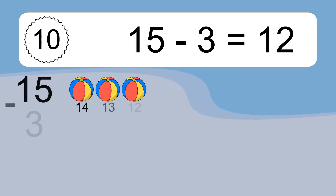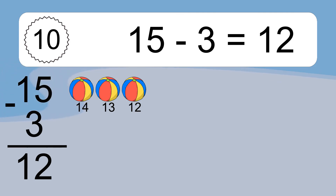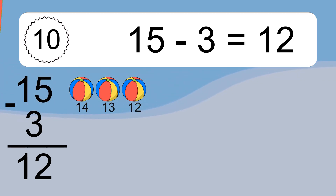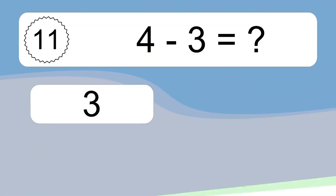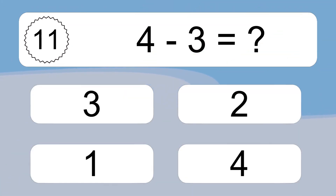15 minus 3 equals what? 15 minus 3 equals 12. Let's count it: 14, 13, 12.